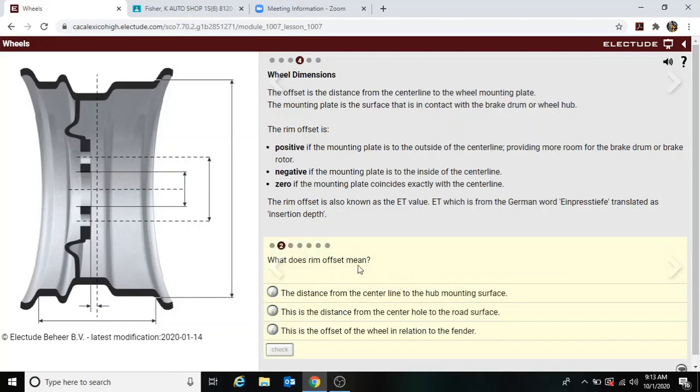Okay, so what does rim offset mean? We didn't read this yet. The offset is the distance from the center line to the wheel mounting plate. Alright, so the center line is here, here is the mounting plate where the lug nut holes are, the back side of it. So you can see there's an offset here already on this one.